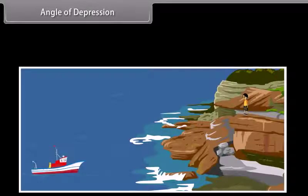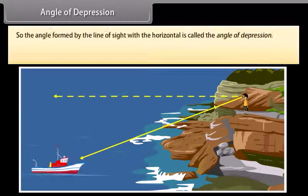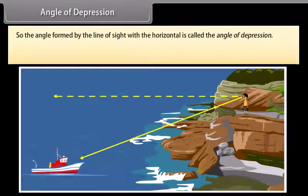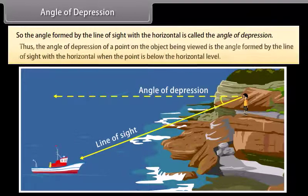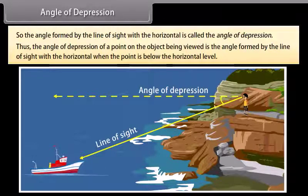Now consider the situation when a boy is standing at the cliff and is looking down at the boat. Here the line of sight is below the horizontal level. So the angle formed by the line of sight with the horizontal is called the angle of depression. Thus, the angle of depression of a point on the object being viewed is the angle formed by the line of sight with the horizontal when the point is below the horizontal level.